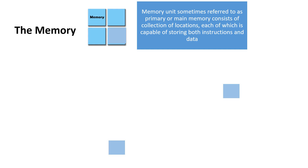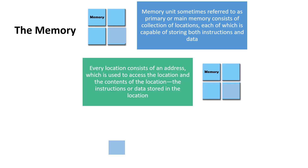The memory unit is sometimes referred to as primary or main memory. It consists of a collection of locations, each capable of storing both instructions and data. Every location consists of an address used to access the location, and the contents of that location — the instructions or data stored there.